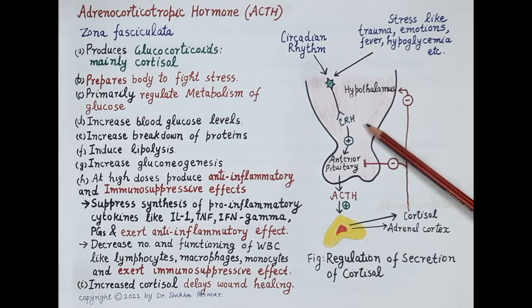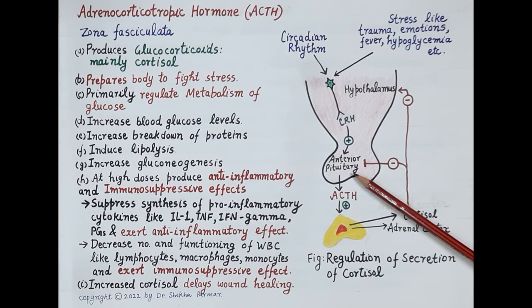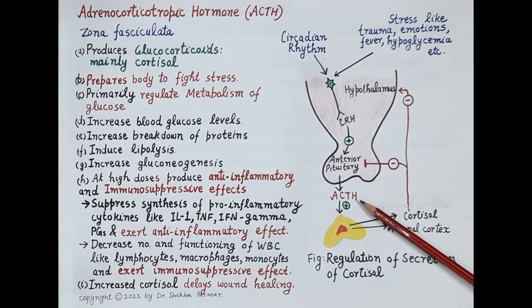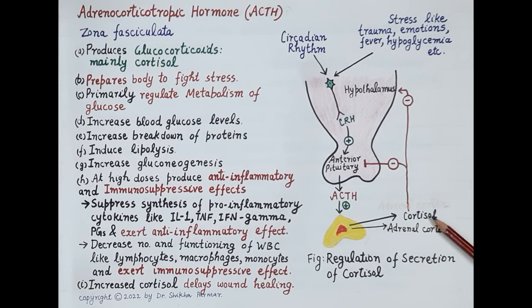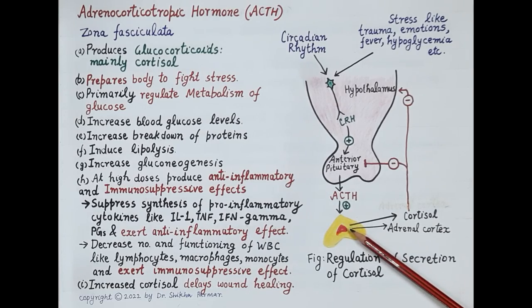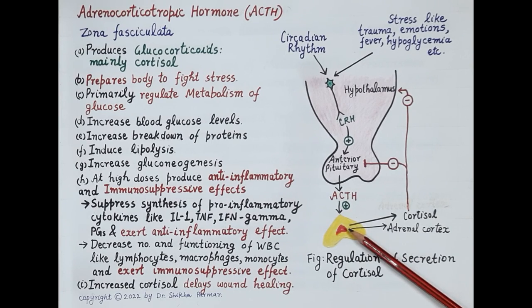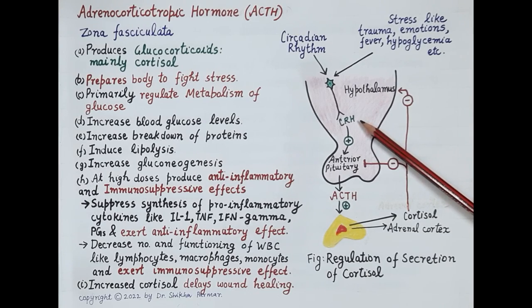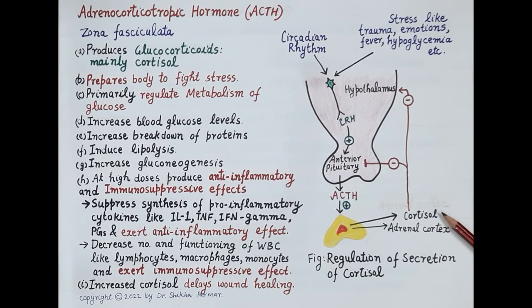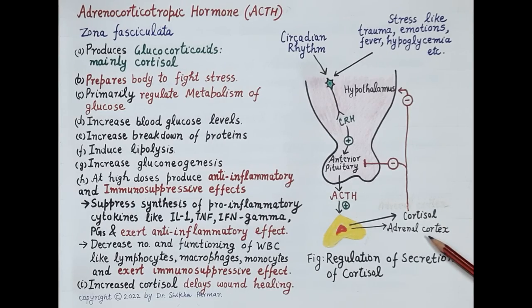It is the circadian rhythm that causes release of corticotropin-releasing hormone, which further stimulates release of ACTH from the anterior pituitary. ACTH further stimulates the release of cortisol from the adrenal cortex. Another very important point is that stress causes enhanced secretion of corticotropin-releasing hormone, which causes enhanced secretion of cortisol from the adrenal cortex.